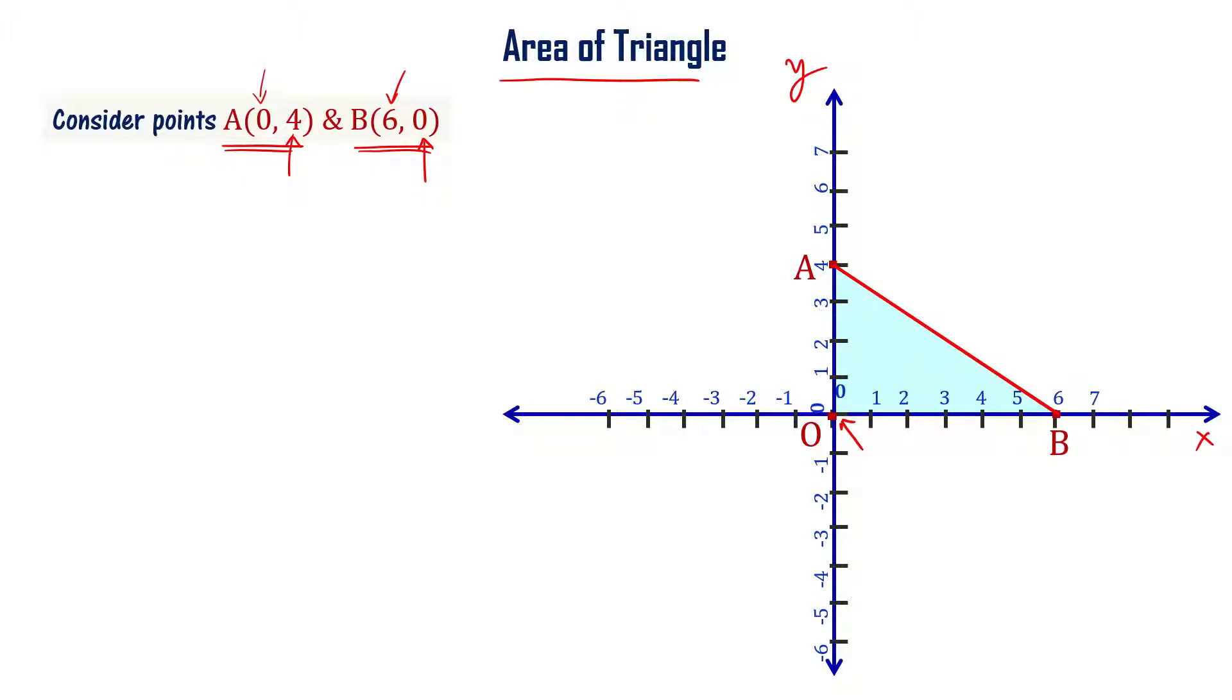Triangle AOB. Can I find the area of this triangle? What is the area of triangle AOB? First, the formula is half base times height. In this particular case, OB is the base, and that is six units in length. OA is the height, and that is four units.